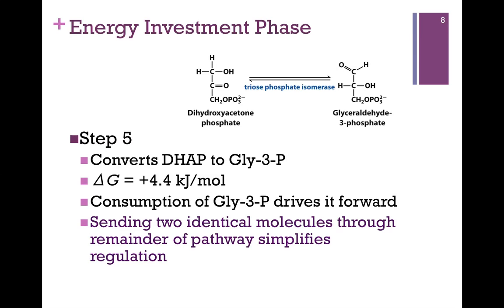If we didn't do that, we'd have to have five steps to convert glyceraldehyde-3-phosphate to pyruvate, and a separate five steps with separate enzymes to convert dihydroxyacetone phosphate into pyruvate. So it makes sense to take one more step to ensure that both molecules are identical for the rest of the pathway.